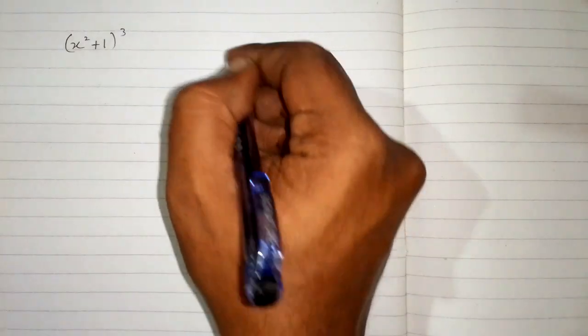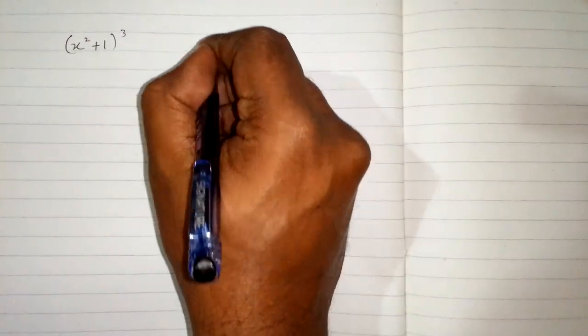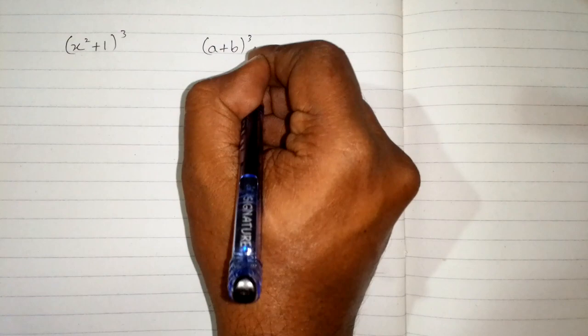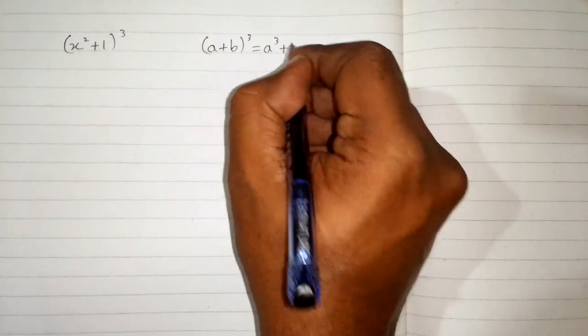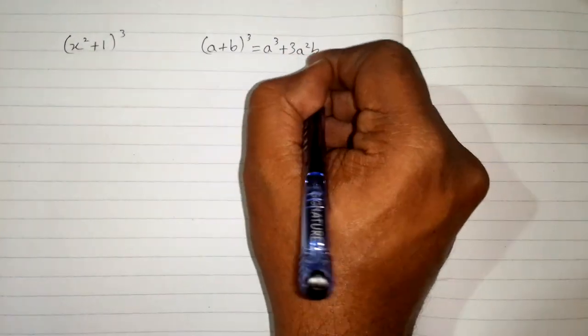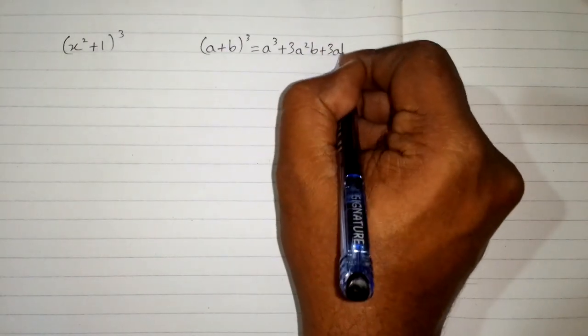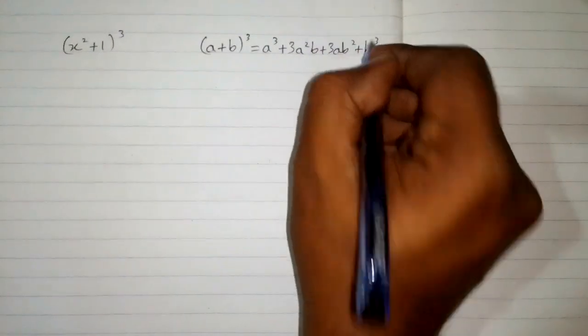In this video we will find the cube of x square plus 1. We will use the algebraic identity: a plus b whole power 3 is equal to a cube plus 3 a square b plus 3 a b square plus b cube.